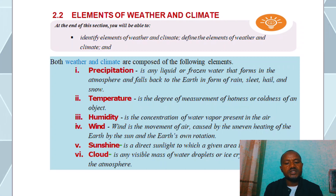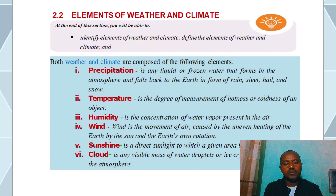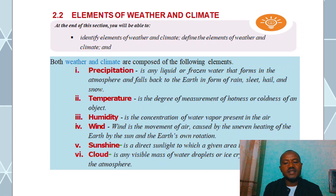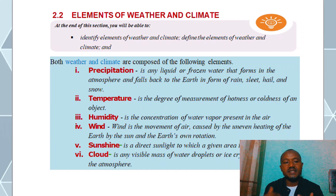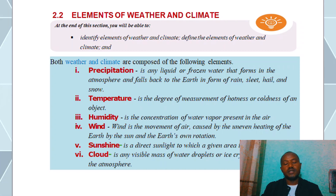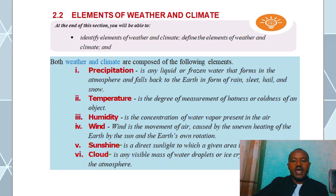Sunshine is the direct sunlight to which a given area is exposed. A cloud is an invisible mass of water droplets or ice crystals suspended in the atmosphere. If you have water vapor, water droplets, or ice crystals, you can see a cloud in the atmosphere and observe the weather and climate elements.